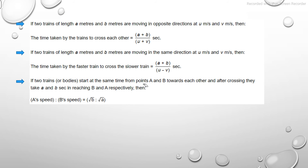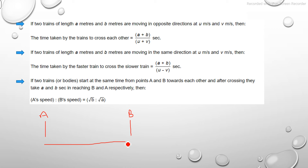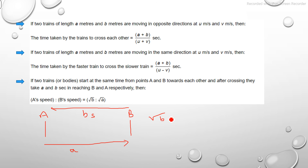The last formula: if two trains start from points A and B towards each other, and after crossing they take 'a' seconds and 'b' seconds to reach B and A respectively, then the ratio of their speeds is given by root b to root a. For example, one train starts from point A toward B taking 'a' seconds, and another starts from point B toward A taking 'b' seconds - the ratio of speed of A to B is √b : √a.